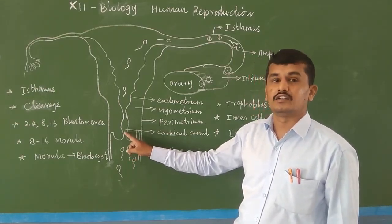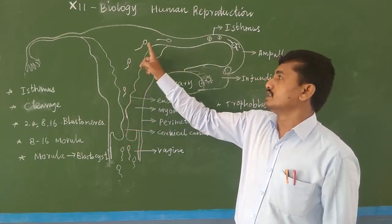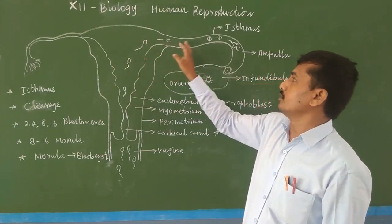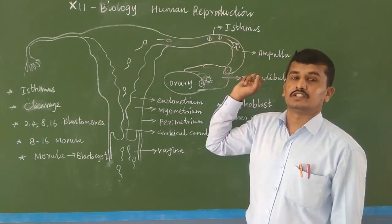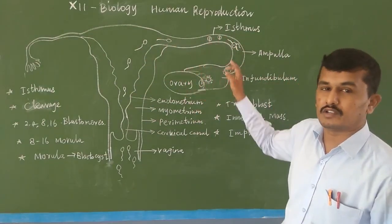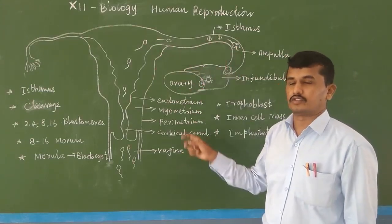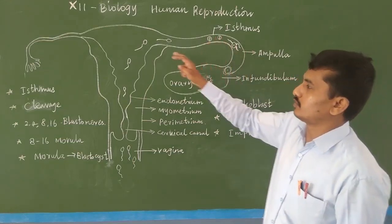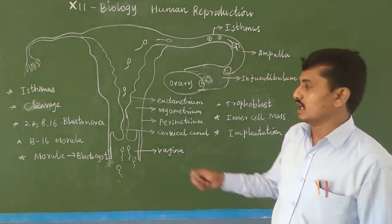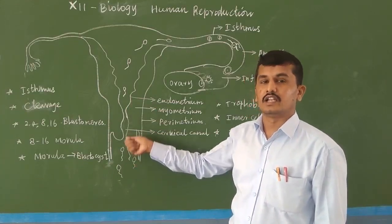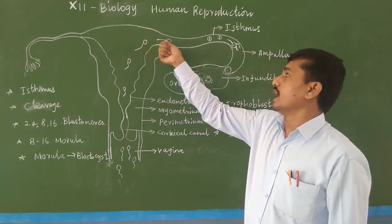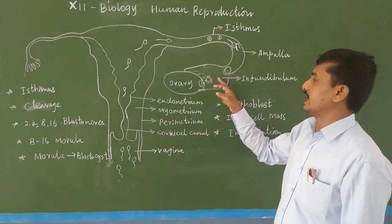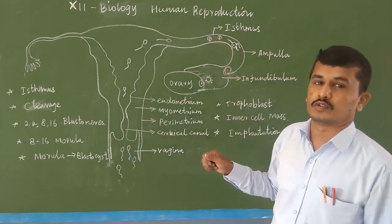The sperm moves through the cervix and cervical canal, through the uterus, and reaches the fallopian tube. The fallopian tube is divided into parts: the infundibulum, the ampulla, and the isthmus. Sperm enters the vagina and travels through the cervix and uterus into the fallopian tube.